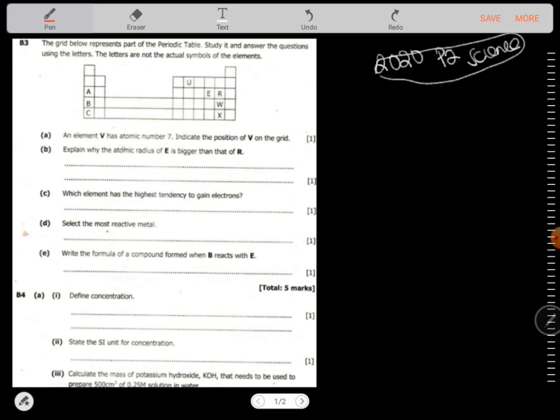Question A says an element V has atomic number 7. There's an element V you can see there, it has got atomic number 7. Now they are saying indicate the position of V on the grid. So if this is an element, A is a mass number then B is the atomic number. So this one has got atomic number 7.